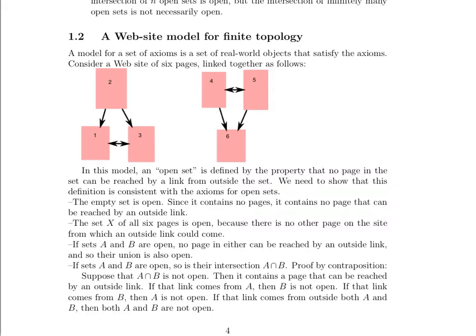If sets A and B are open, no page in either can be reached by an outside link. And so their union is also open.